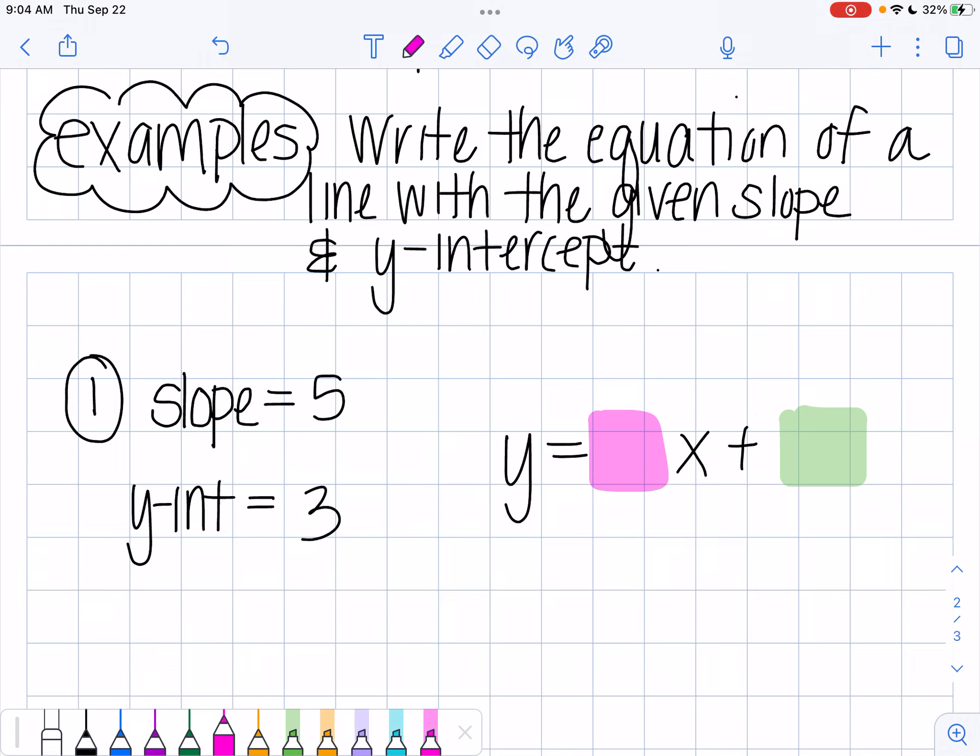This first example says that my slope is 5 and my y-intercept is 3. Remember that our equation looks like y equals mx plus b, where m represents the slope, and b represents the y-intercept.